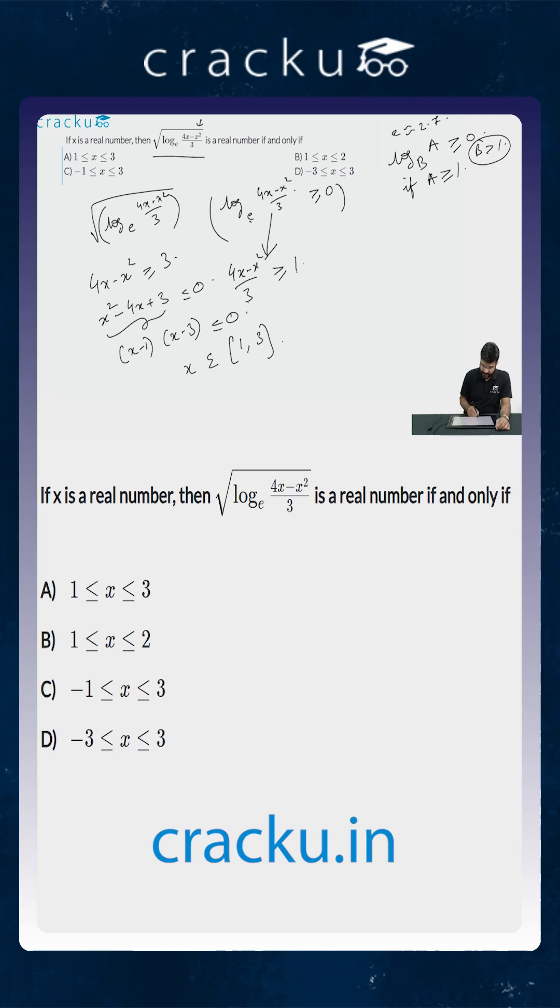Both of them are included because it is less than or equal to 0. That is, 1 has to be less than or equal to x has to be less than or equal to 3, or if you look at the options, it is option A.